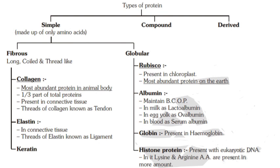Albumin is present in milk as lactalbumin, in egg yolk as ovalbumin, and in blood as serum albumin. Globin proteins are present in hemoglobin. Histone proteins are present in eukaryotic DNA, and in histone proteins, lysine and arginine amino acids are present in greater amounts.